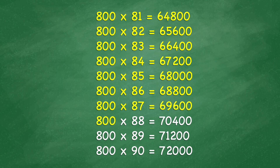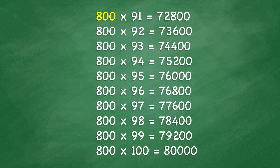800 times 88 equals 70,400. 800 times 89 equals 71,200. 800 times 90 equals 72,000. 800 times 91 equals 72,800.